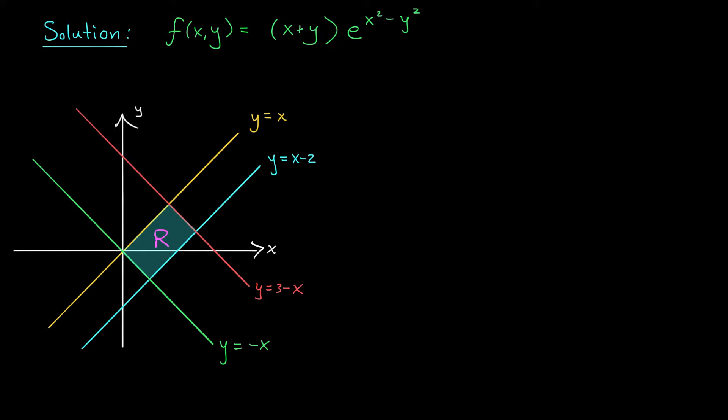I'm expected to integrate over this region, but it's not the nicest region to work with. It's not type 1, it's not type 2. So perhaps a change of variables could help me clean this up. Unfortunately, unlike in the last example, we haven't been given a change of variables. Here, we need to come up with a transformation ourselves.